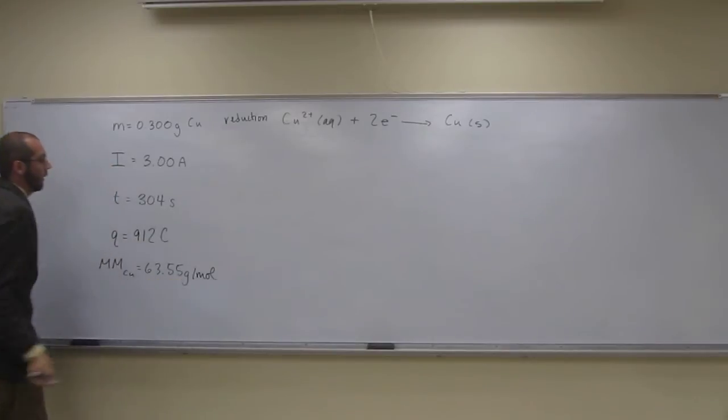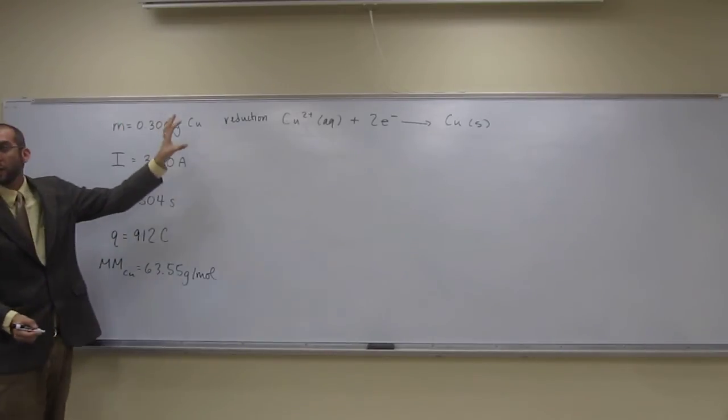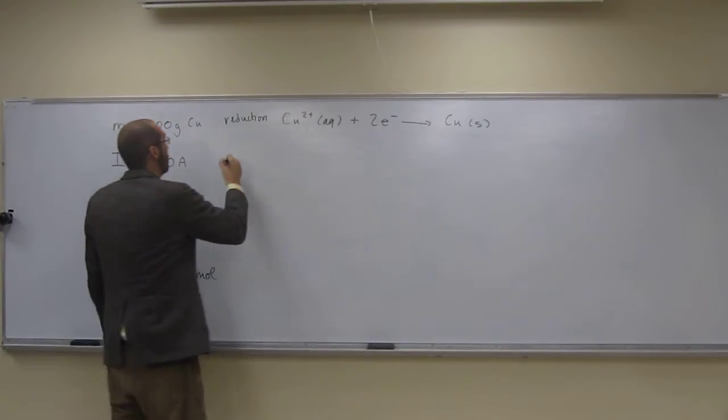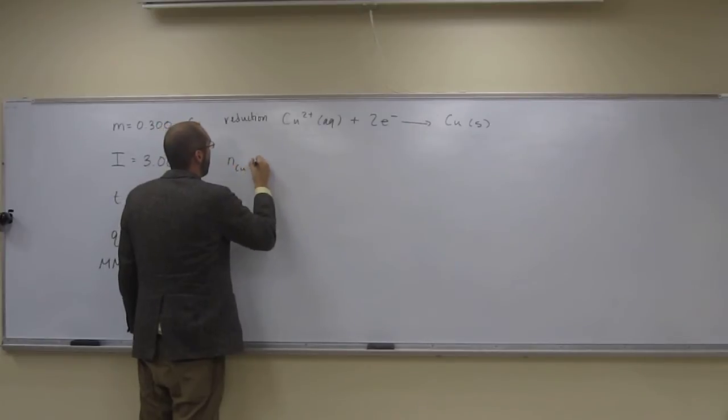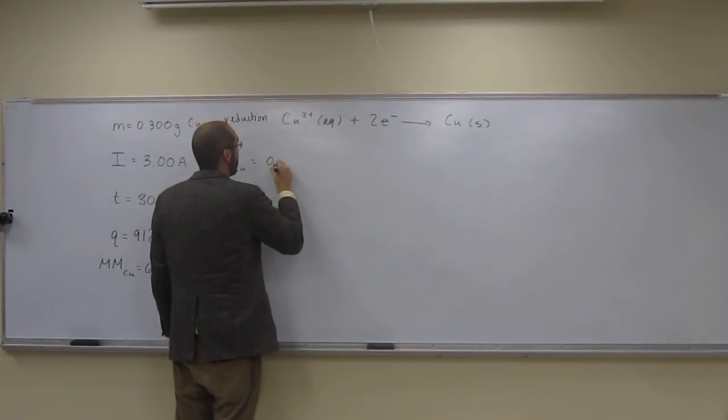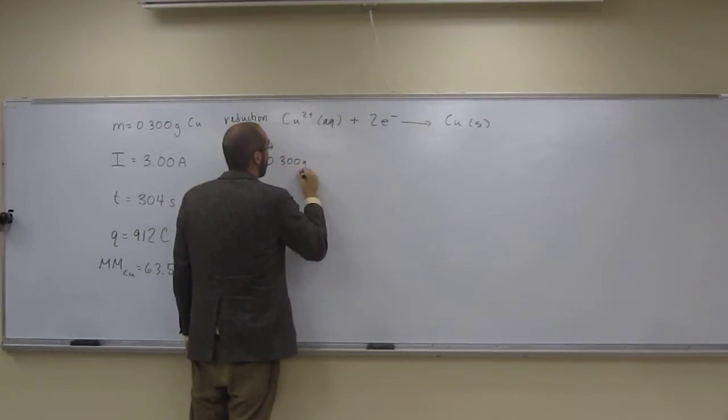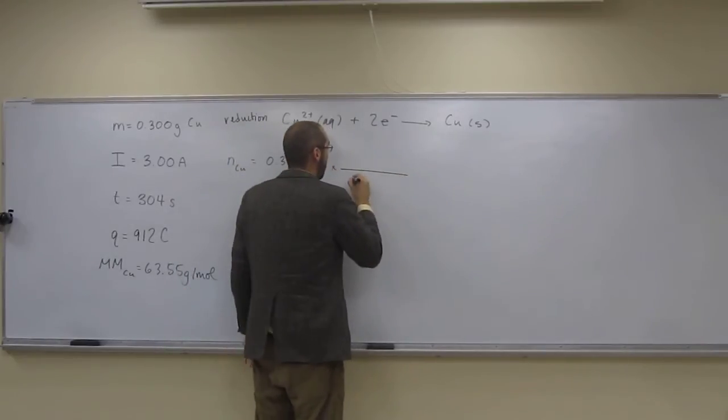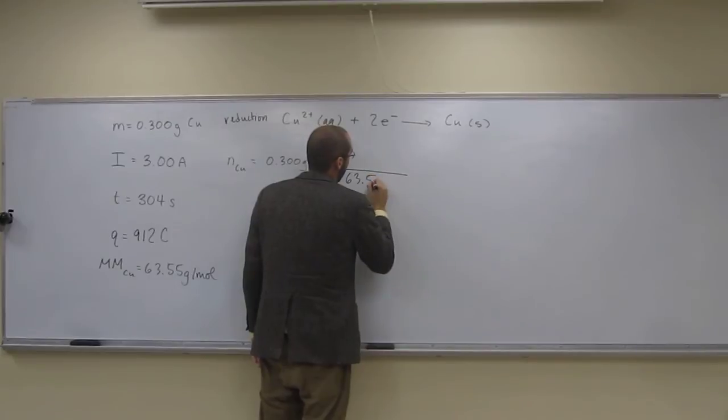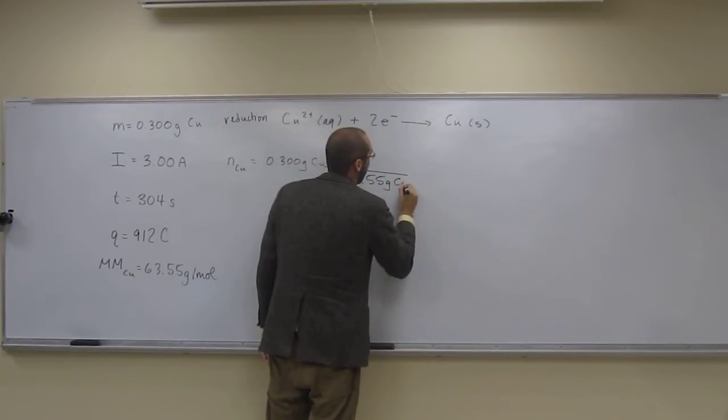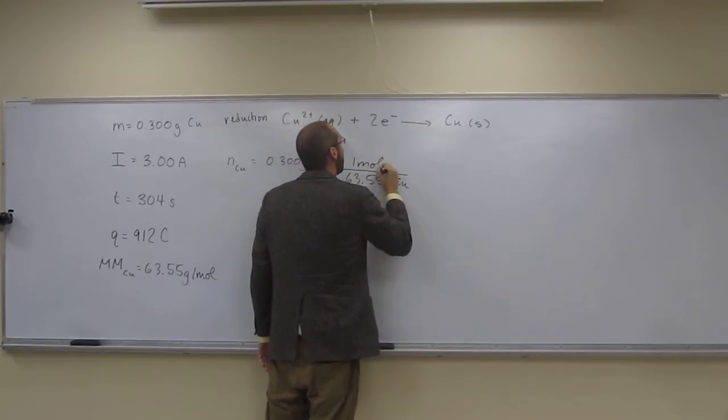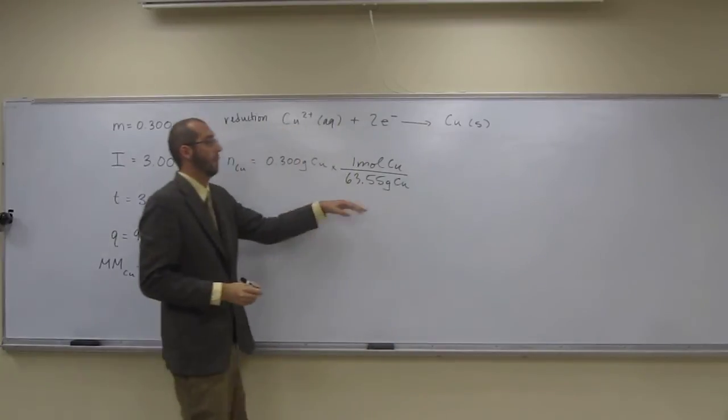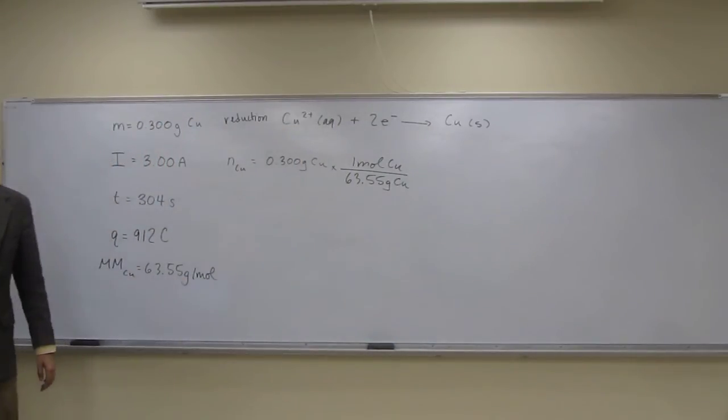Grams per mole. So let's write that down. So that should give us the number of moles. We could get the number of moles of copper, right? So 0.300 grams of copper times 1 mole of copper divided by 63.55 grams of copper.